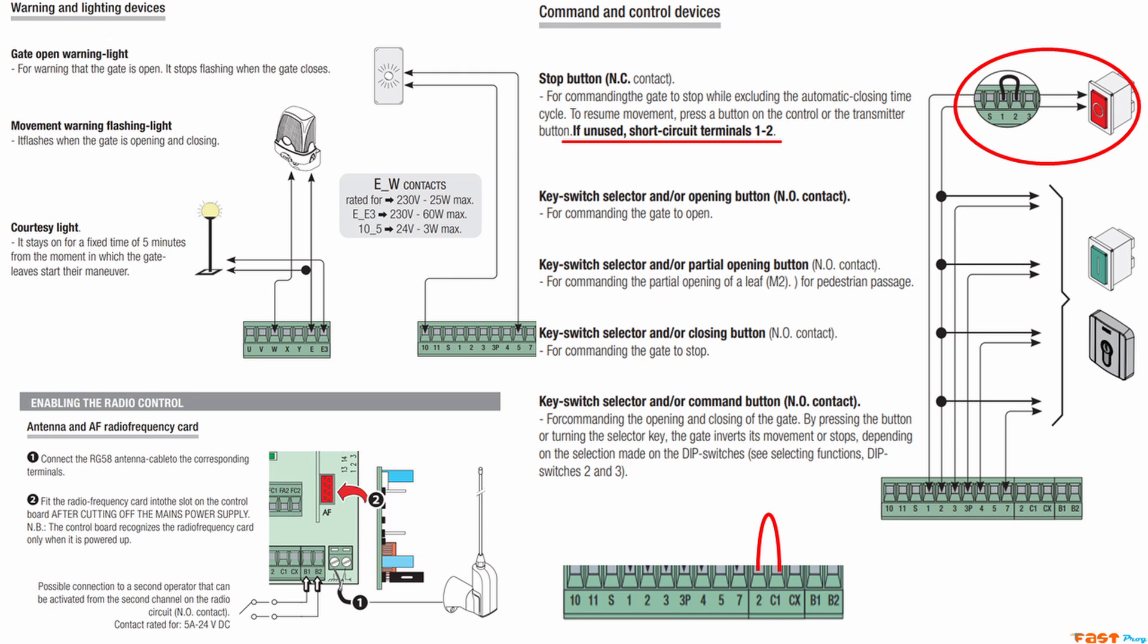Once all your electrical connections are done, power on the system. At this point, if everything's good, the prog signal light should be off. If it's blinking, check if the jumpers are tightened properly.